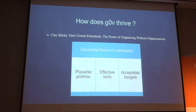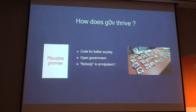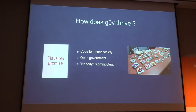I want to analyze why GovZero can thrive. According to Clay Shirky, a successful community can break down into three elements: plausible promise, effective tools, and a successful bargain. The promise given by a community must sound plausible — not too difficult to realize. Back in 2012, before GovZero was established, citizens were tired of politics. With the slogan 'code for a better society,' GovZero gave people a society they wanted. The first GovZero project transformed budget data into an interactive website and infographics, making once dull and difficult data easily understood — people could find out where their tax money was spent.